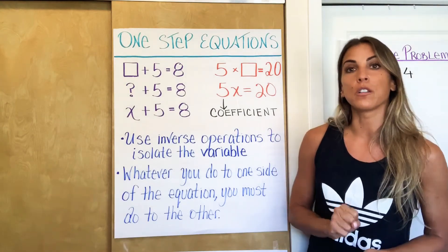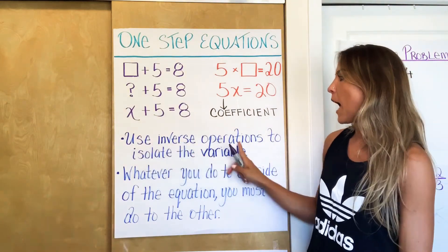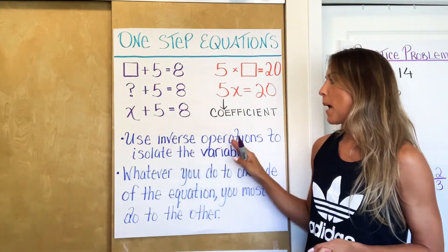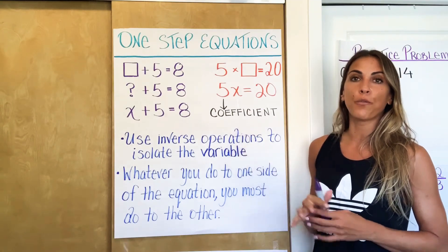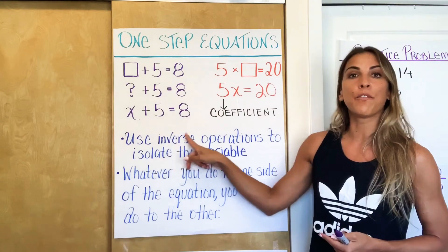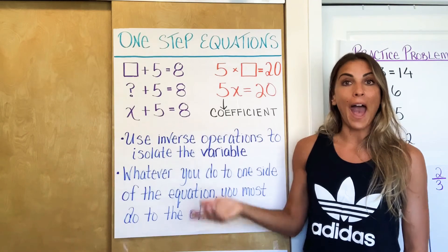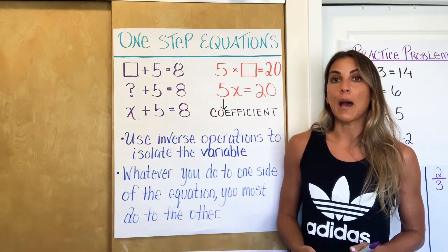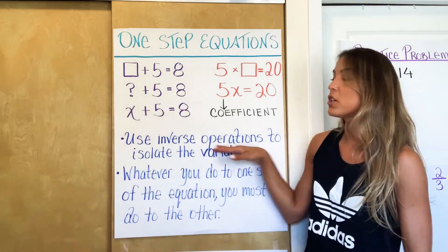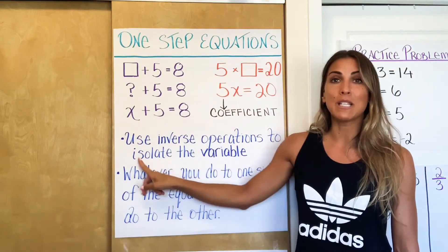There are two steps we're going to focus on. Number one: we're going to use inverse operations to isolate the variable. When I talk about operations, I mean your four simple math operations — adding, subtracting, multiplying, and dividing. Inverse just means opposite. So the inverse of adding is subtracting, the inverse of subtracting is adding, the inverse of multiplying is dividing, and vice versa. We're going to use these opposite operations to isolate — meaning get by itself — the variable.